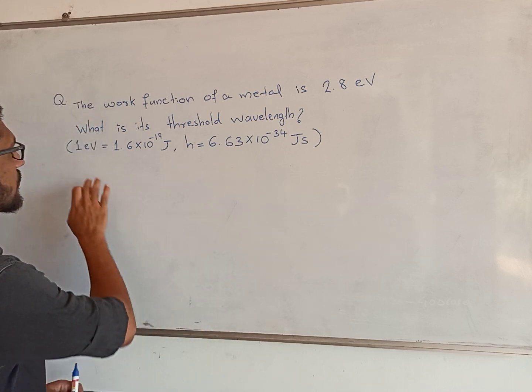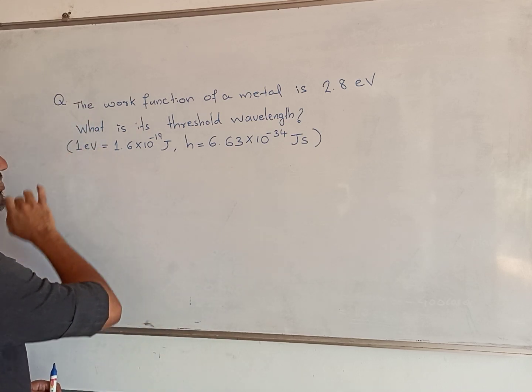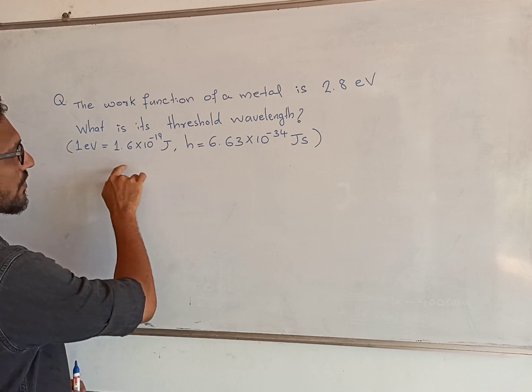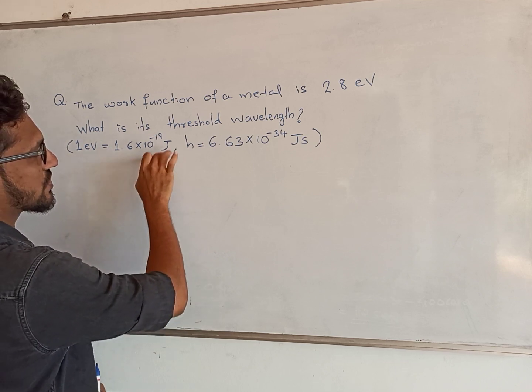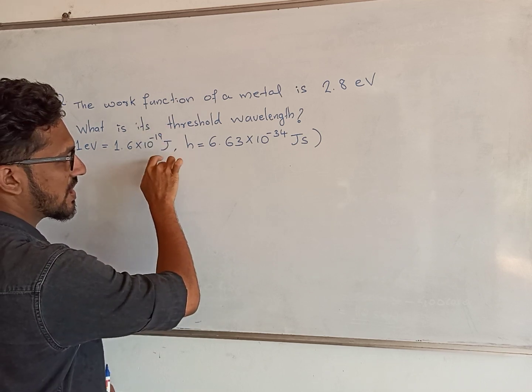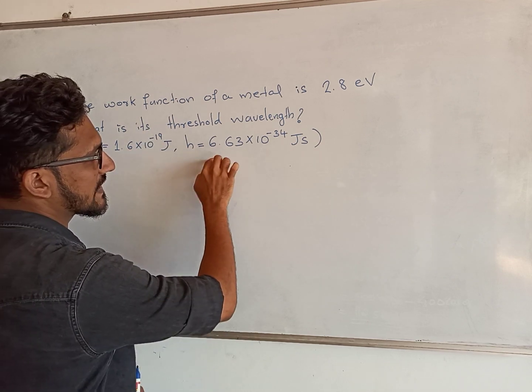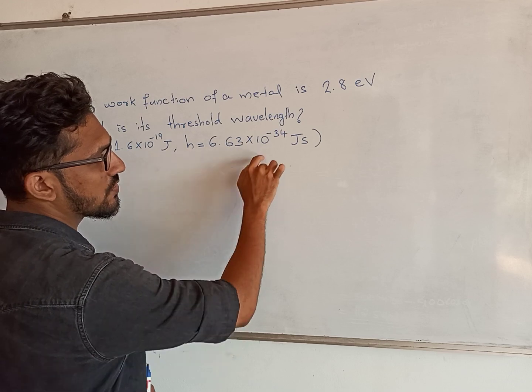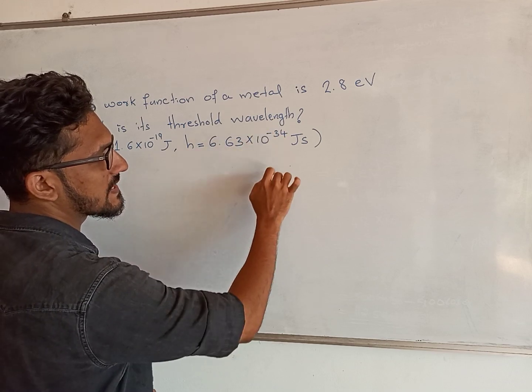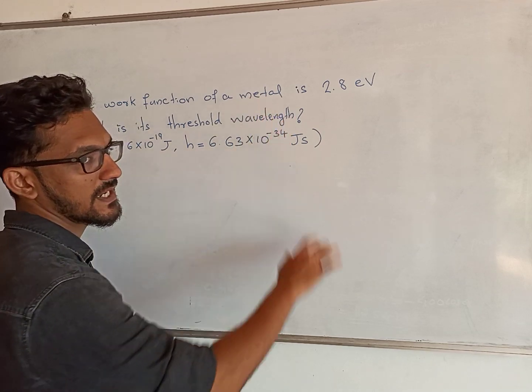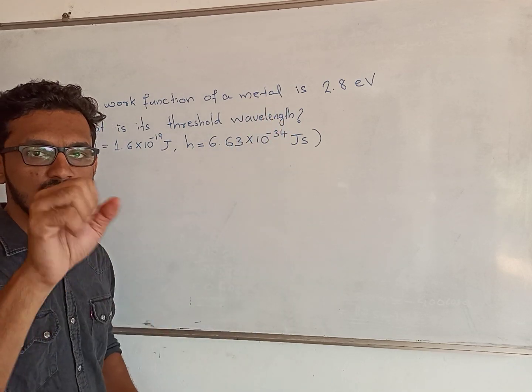In the question, the given data are: 1 electron volt is equal to 1.6 into 10 raised to minus 19 joule, and h is equal to 6.63 into 10 raised to minus 34 joule second. These two data are fixed in the question.